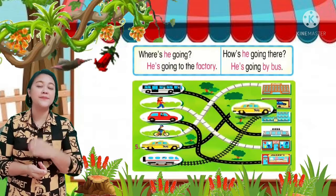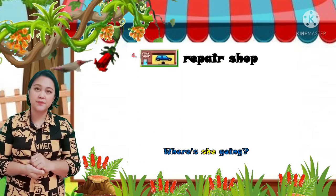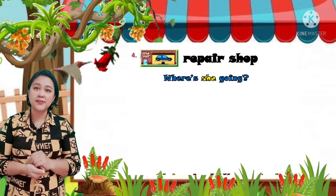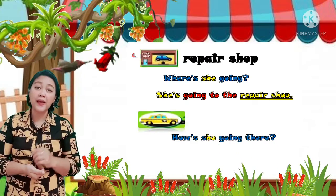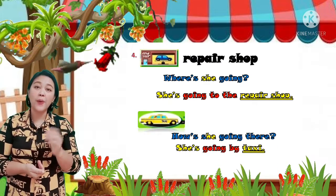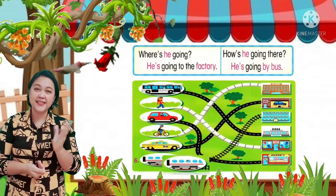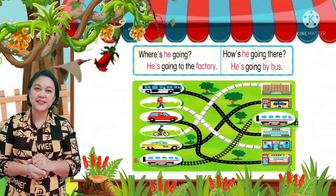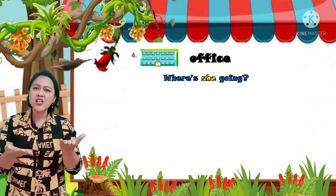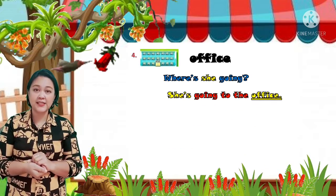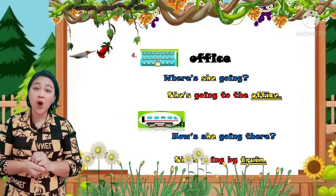Number 5. Repair shop. Where's she going? She's going to the repair shop. How's she going there? She's going by taxi. Number 6. Office. Where's she going? She's going to the office. How's she going there? She's going by train.